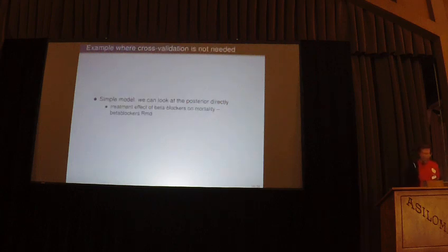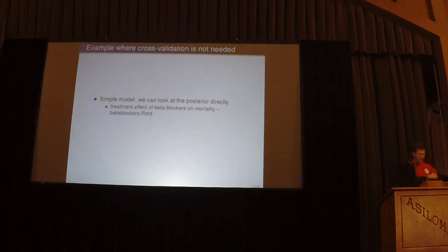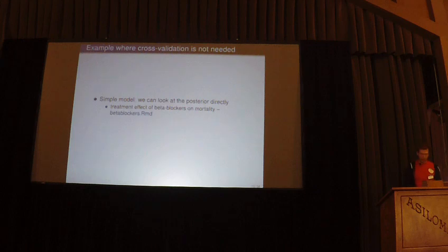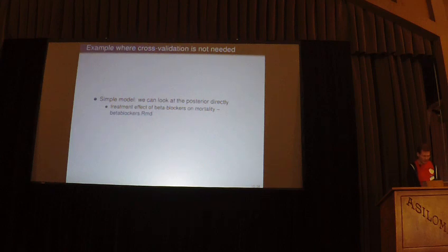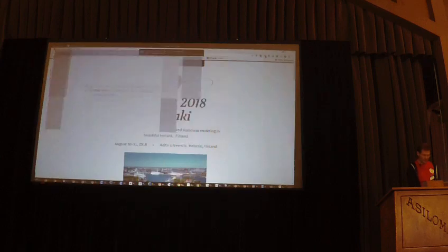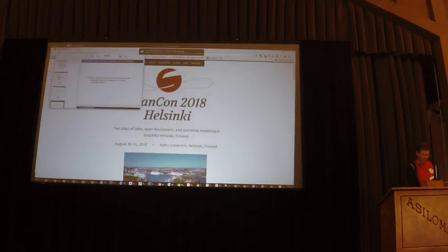Now I go to the beta blockers notebook — an example where we can look at the posterior directly and don't need cross-validation.